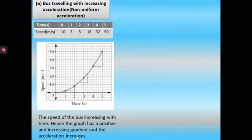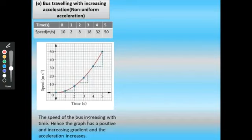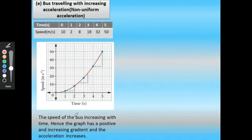For a bus traveling with increasing acceleration (non-uniform acceleration): the time is given from 0 to 5 seconds and the speed is also given. The graph is plotted with time on the x-axis and speed on the y-axis. The speed of the bus increases with time, so the graph has a positive and increasing gradient and the acceleration increases.